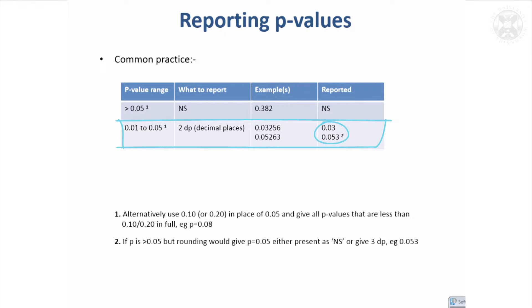The only exception where I'd use three is if you've got something that's borderline significant, and if you summarize that as 0.05, people would think that was significant, whereas it wasn't quite significant. So I'd maybe just add an extra significant figure.